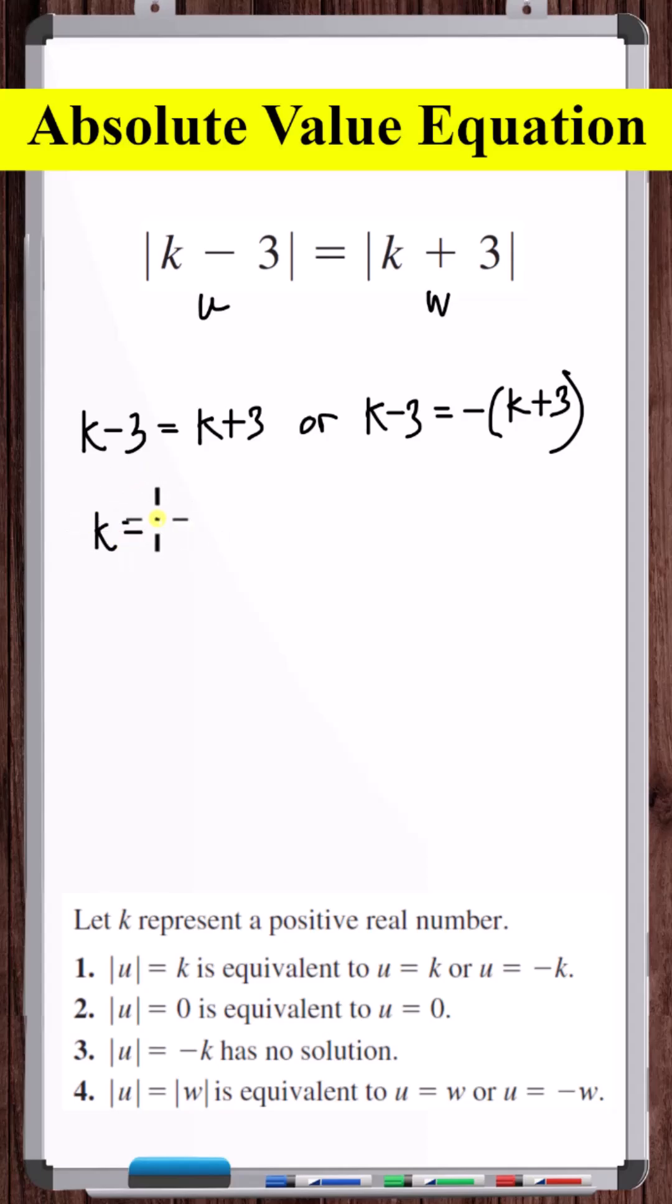Let's solve this equation. Add three to both sides. Now subtract k from both sides, but zero is never equal to six. So there's no solution to this equation.